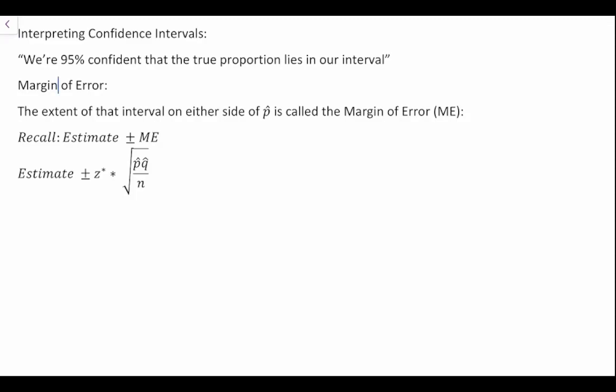Let's first talk about how do we calculate the confidence interval. When we're looking at our confidence interval, we have a basic equation that looks like this: our estimate plus or minus our margin of error. To calculate our margin of error, we use the following equation: Z star times the square root of P hat times Q hat divided by N.